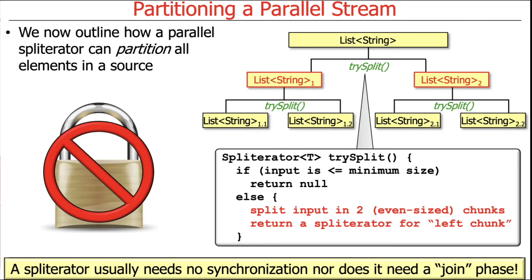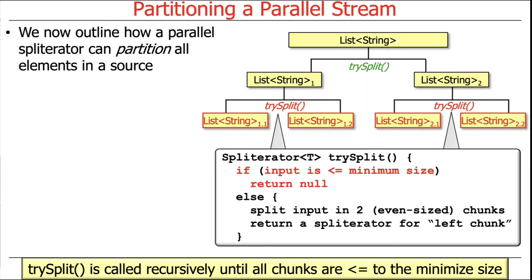One of the cool things about how spliterators are designed is there's no need to add any synchronization manually. It arranges the splitting so there are never race conditions, atomicity problems, visibility problems, or ordering problems. Nor do you have to do any joining yourself — that's all handled by the Java streams framework. The base case for trySplit, which you can think of as basically recursive, is: if the input is less than or equal to some minimum size, just return null. When you look at Java collection implementations of trySplit, it typically takes things down to a size of one.